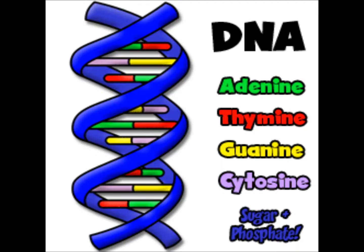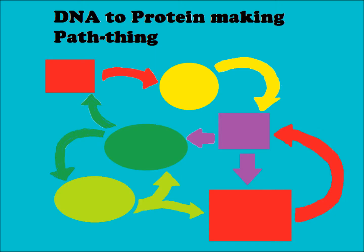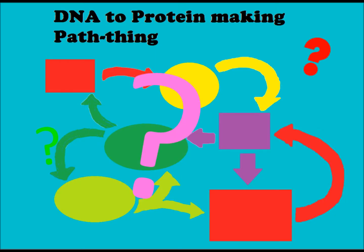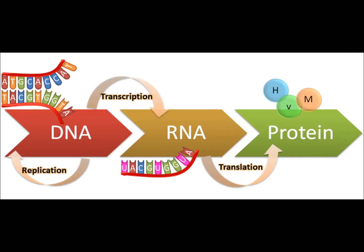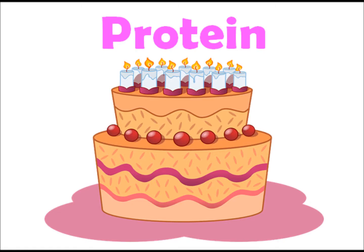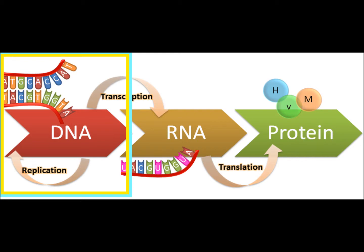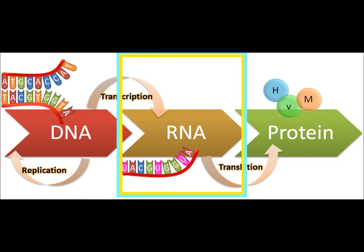But how does the code of DNA become a functional process? How is this process regulated? And how can manipulating the process be used to create plants that are resistant to disease? For the functional material of a cell to be made, which are proteins, DNA must first be used to make RNA.